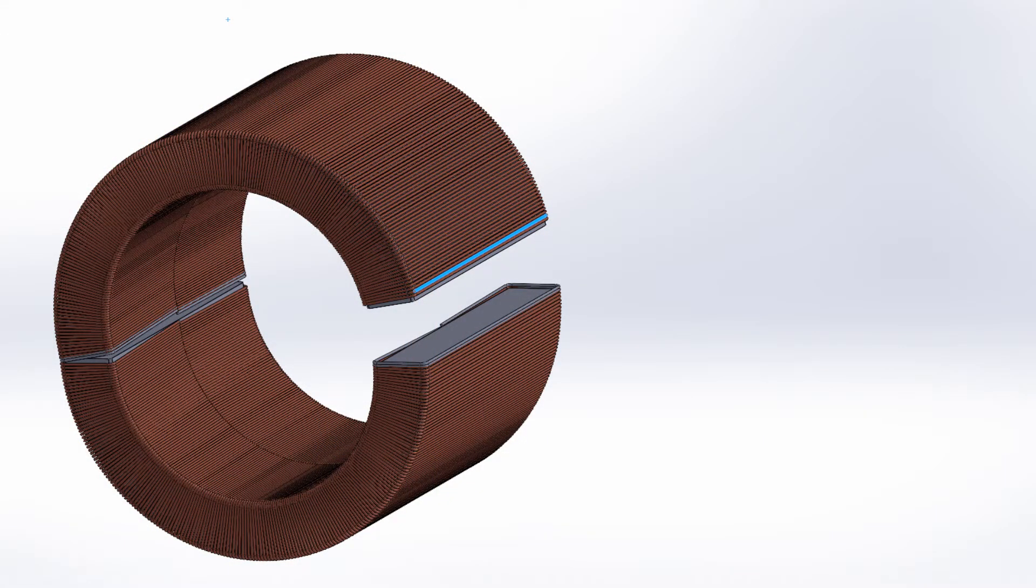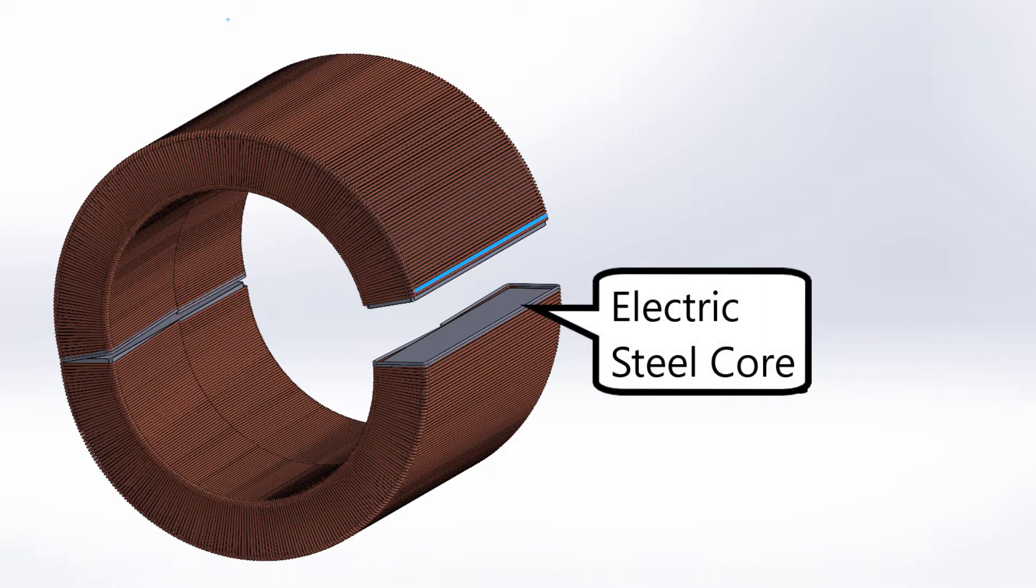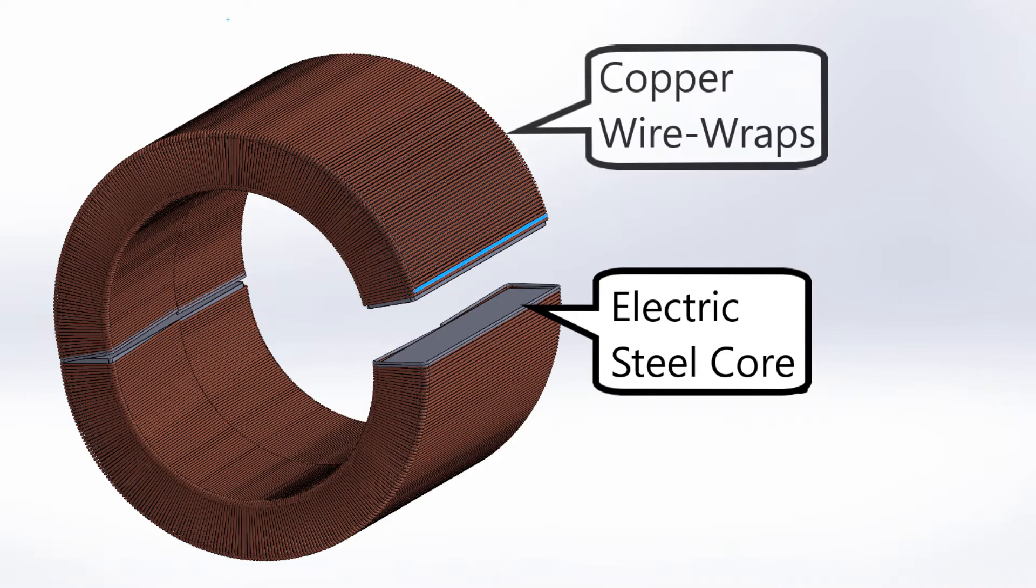An inductive coil needs to be made from certain materials in a certain way, or it will not be able to generate a current. We used electric steel for the core because of its magnetic properties, and wrapped it in copper wire for its electrical conductivity.